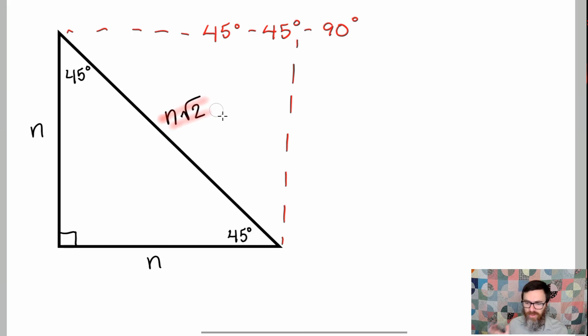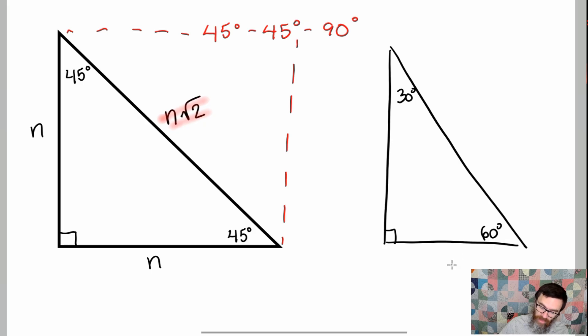So very similar to the stuff that we saw in the previous video when we're looking at our 30, 60, 90 degree triangles, right? So 30 is going to be the smaller one, there's 60, this is n, the hypotenuse is 2n, and this would be n square roots of 3. So it's all about these ratios.